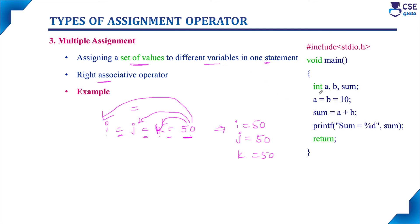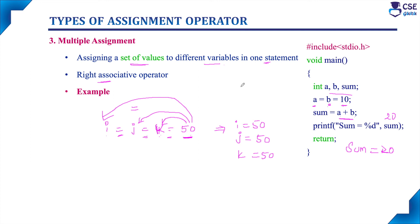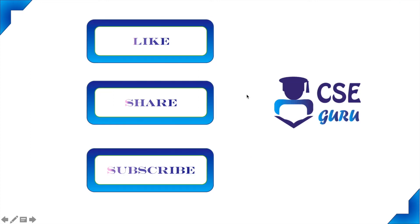For example, with integer variables a, b, and sum: a = b = 10 assigns the value 10 to both a and b, so both memory locations hold 10. Adding a + b gives 10 + 10 = 20, so the output is sum = 20. This is multiple assignment. This concludes the concept of assignment operators. In the next session, we will discuss arithmetic operators. Thank you for watching.